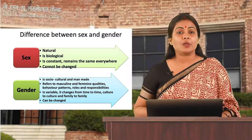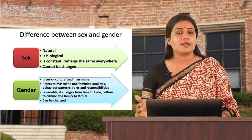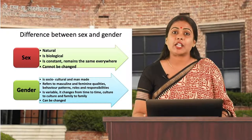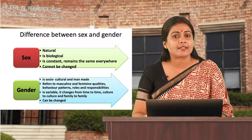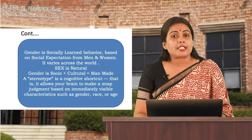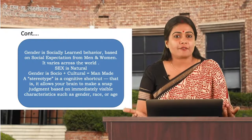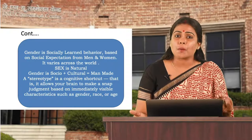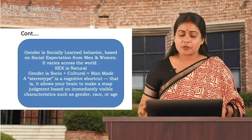Sex is constant and remains the same everywhere — a girl born in India will be a girl born in America as well. But gender is variable: it changes from time to time, from culture to culture, and from family to family. Unlike sex, gender is man-made and social. Society basically transforms a male and a female into a man and a woman, and into a masculine and a feminine.